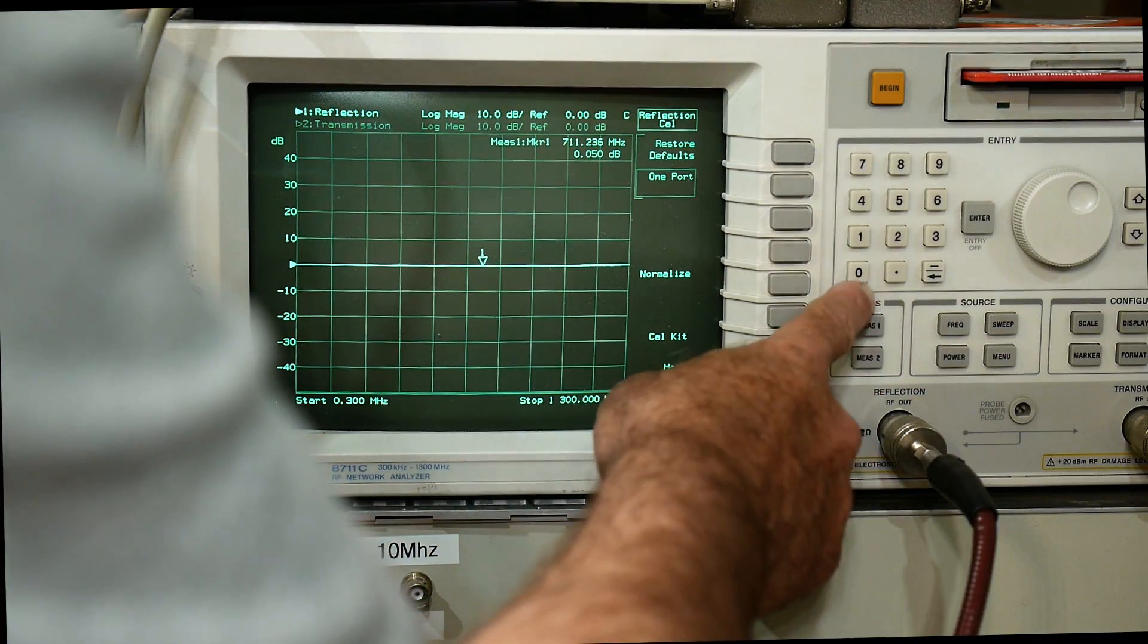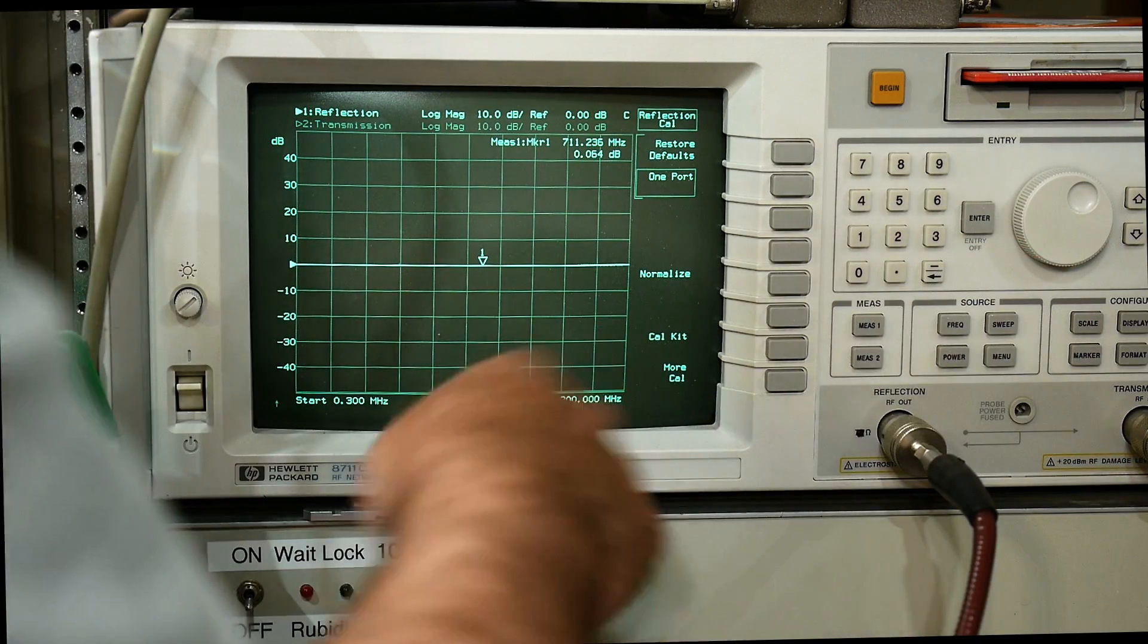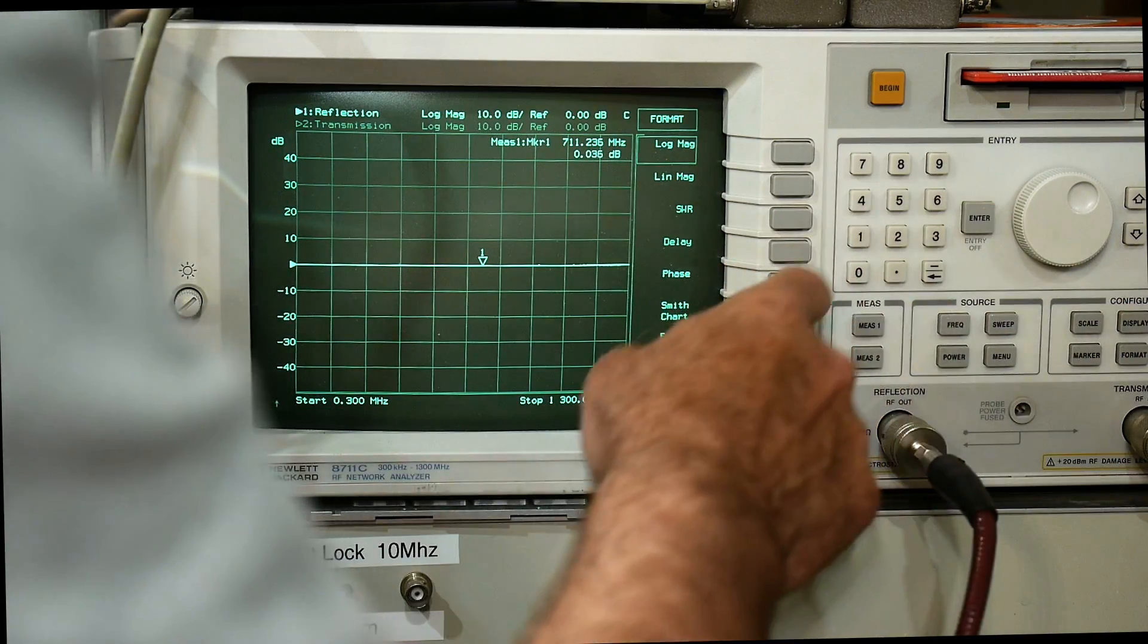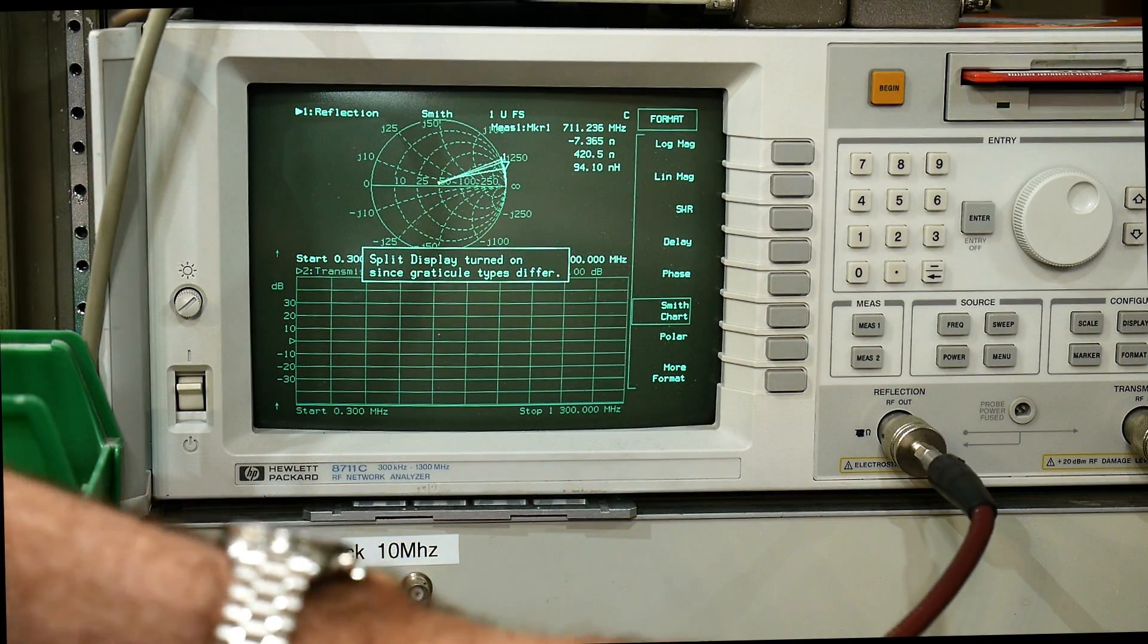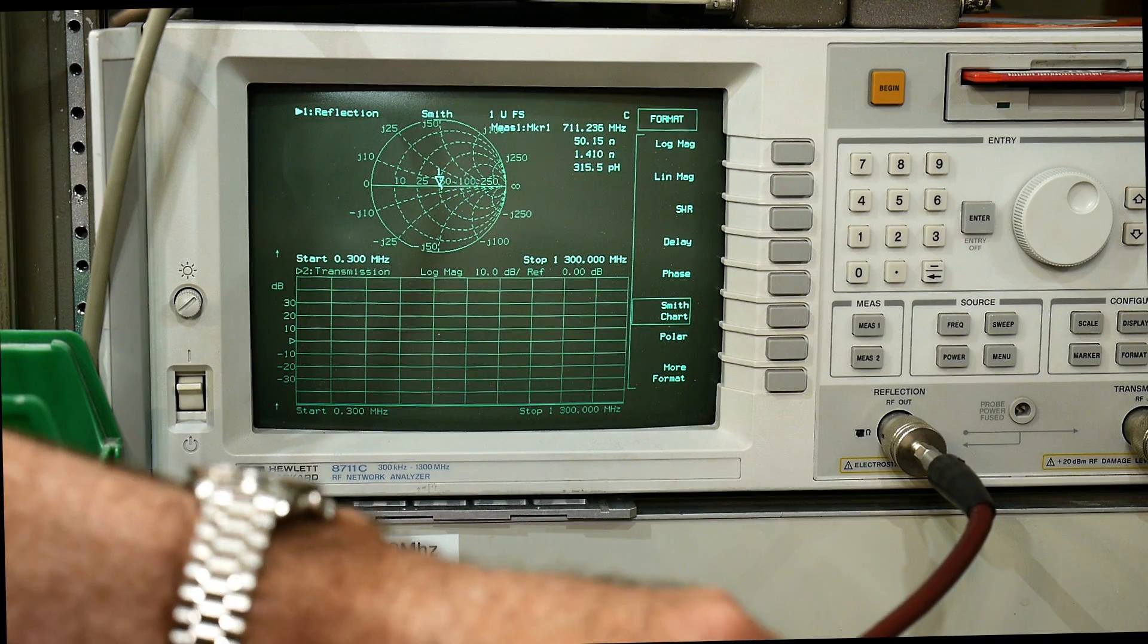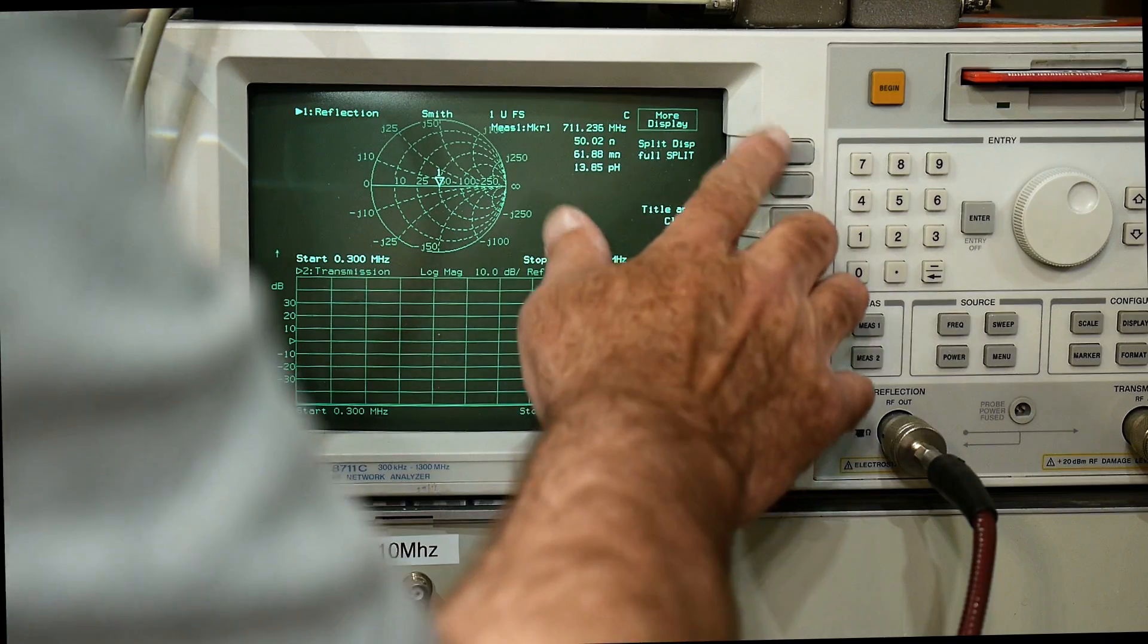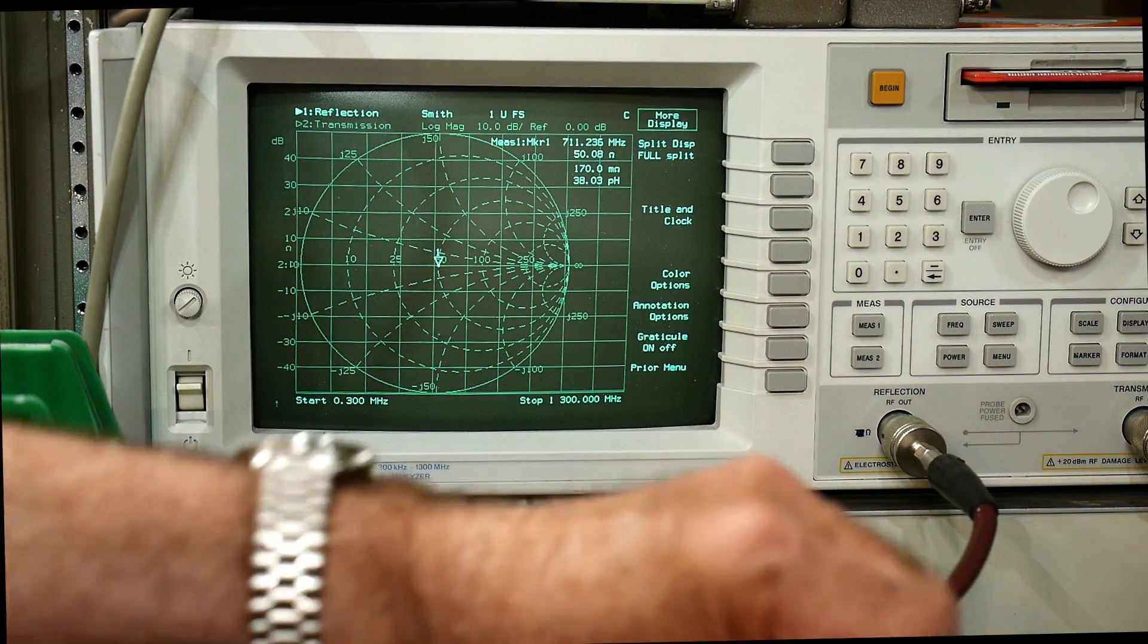Let's do a reflection. We're in return loss. You saw it way down here, that's a really good return loss. People want to see Smith chart, let's go to Smith chart. I'll put my load back on so you can see what it's going to look like. Let's do a big picture. There we go, so we get a single little dot there when I have my load on.